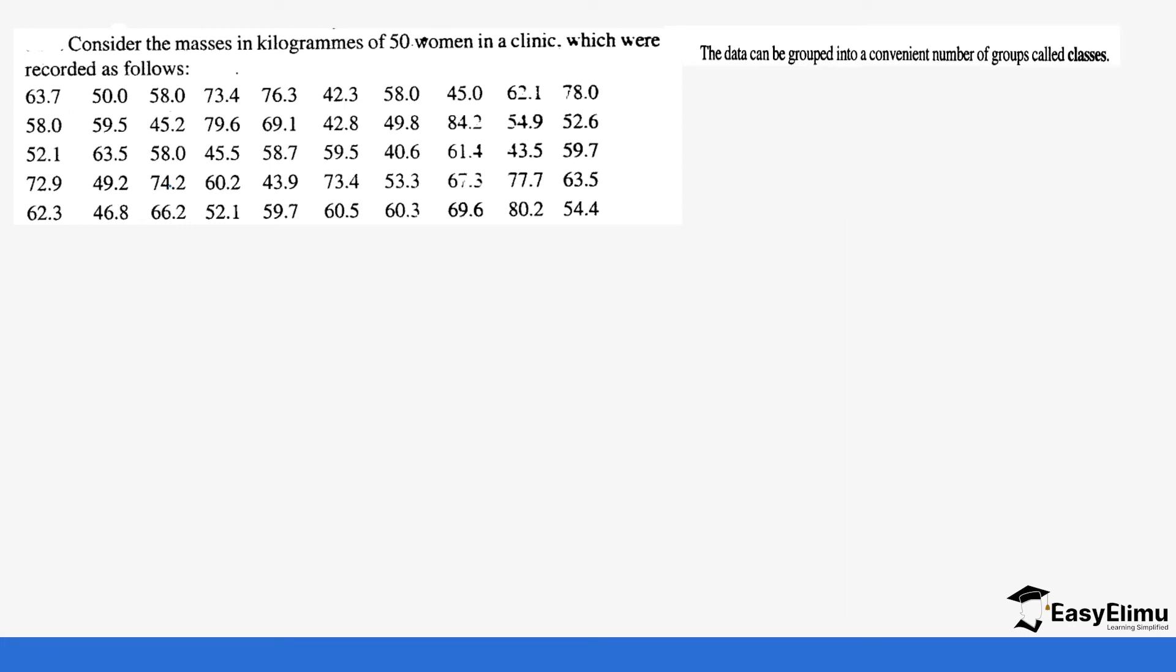The highest value, you notice, we have 79, we have 80 here, we have 84.2. So the biggest value is 84.2. And then the smallest value, we have 42, we have 45, we have 40 here. Actually 40.6 is the lowest value. So if you do this subtraction, 84.2 minus 40.6, you're going to get 43.6.